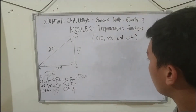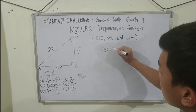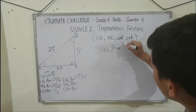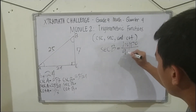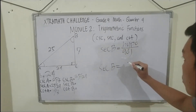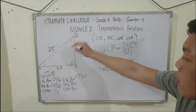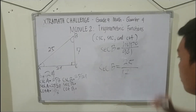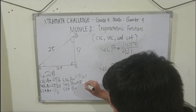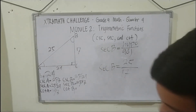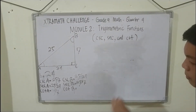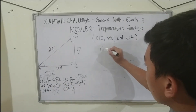In the sixth problem, we are asked to find secant B. Secant B is equal to our hypotenuse which is 25 and the adjacent of our reference angle B which is 7. So the ratio of secant B is equal to 25 over 7.